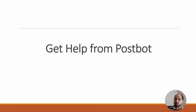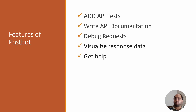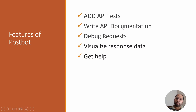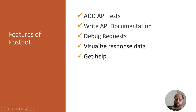Let's quickly recap what we covered. We discussed Postbot, which is an AI assistant of Postman. We can add test scripts and see the results. We discussed how to generate documentation for an API request, how to debug a particular request when getting errors, how to visualize the response, and the help we can get from Postbot. That's what I wanted to cover.